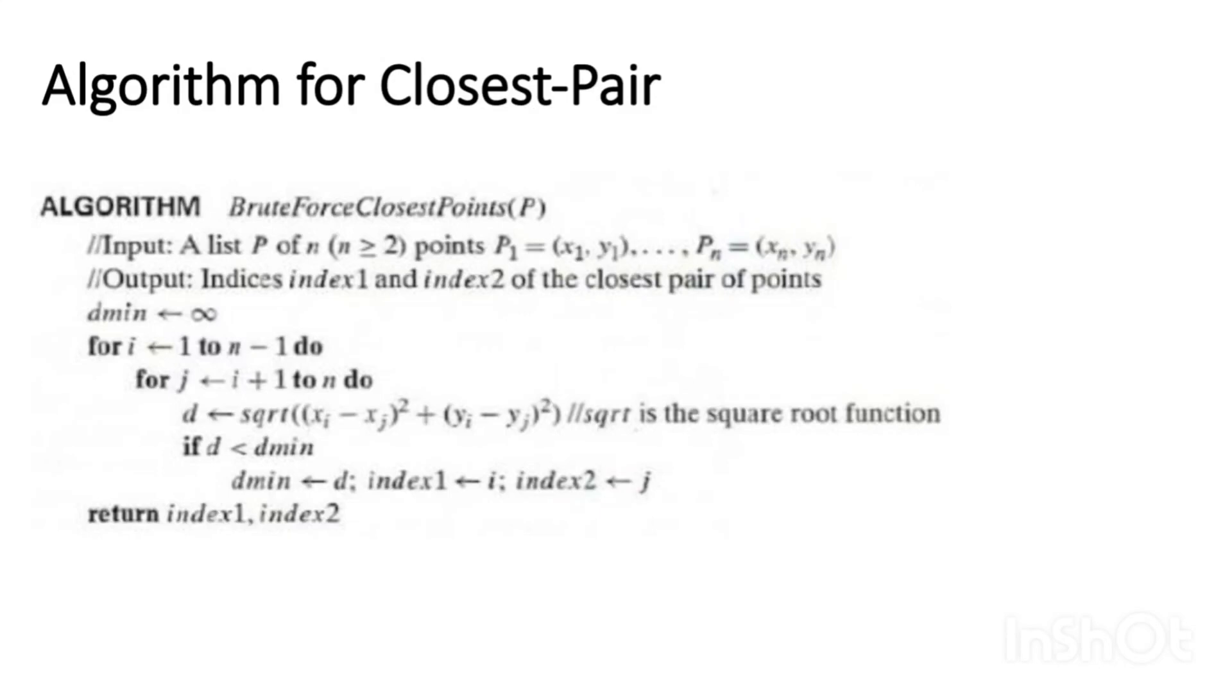dmin or minimum distance is equal to infinity. For i is equal to 1 to n minus 1 do, for j is equal to i plus 1 to n do, distance is equal to square root of xi minus xj whole square plus yi minus yj whole square. So sqrt is the square root function.